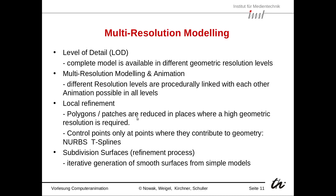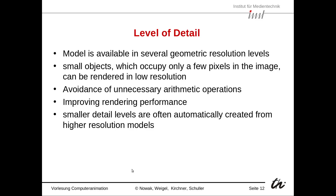We also have local refinements, which are polygons or patches that are reduced in places where a high geometric resolution is required — meaning we have more of them. Control points can be placed only where they contribute to geometry, for instance in NURBS or T-splines where we can insert control points. Then we have subdivision surfaces, which is a refinement process — an iterative generation of smooth surfaces from simple models.